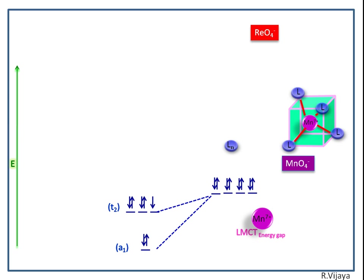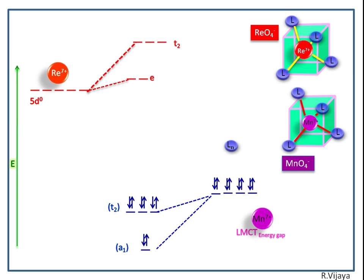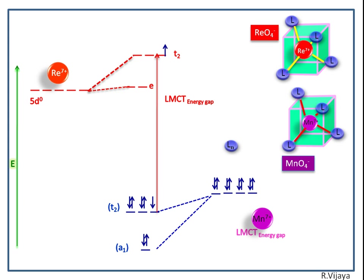Now we discuss the tetrahedral geometry of perrhenate. Here rhenium also has a +7 oxidation state, and its 5d orbitals have higher energy than the 3d orbitals. The 5d orbitals in tetrahedral geometry split into E and T2 symmetry. Because of the high oxidation state of rhenium, its energy decreases. We can see how the electron is transferred from the ligand — that is, the oxygen orbital — to the rhenium metal orbital. This transition is known as ligand-to-metal charge transfer. The energy gap between these two orbitals is known as the LMCT energy gap.